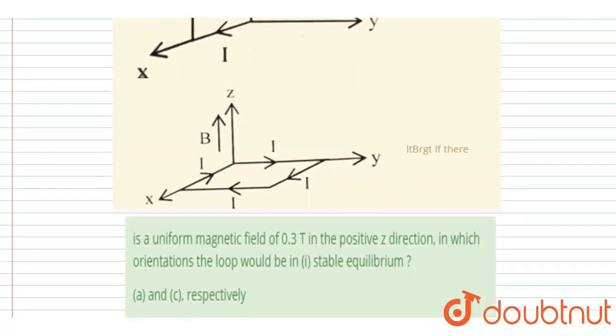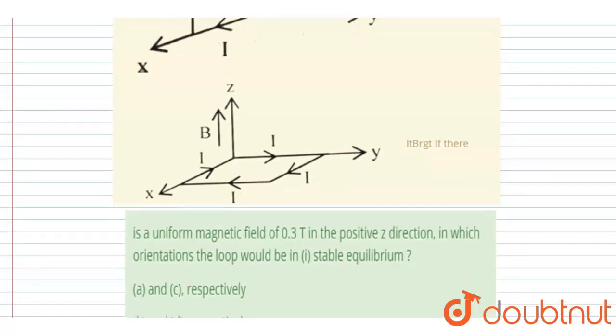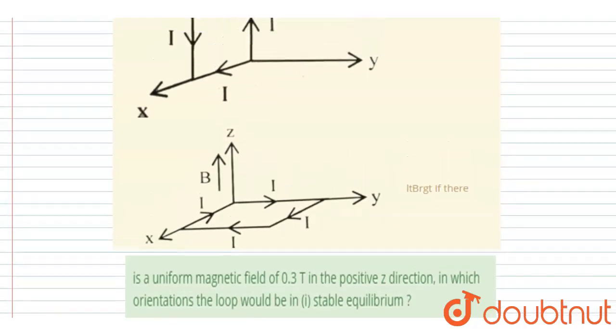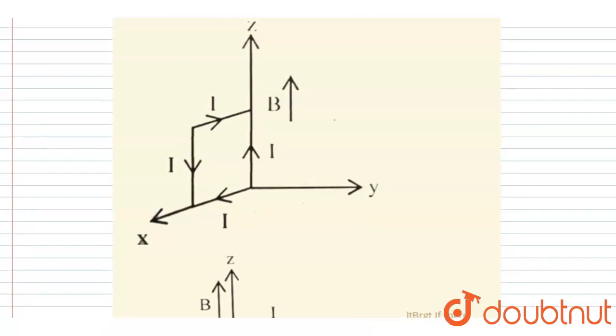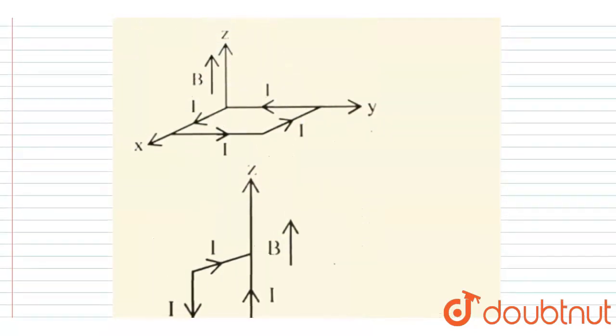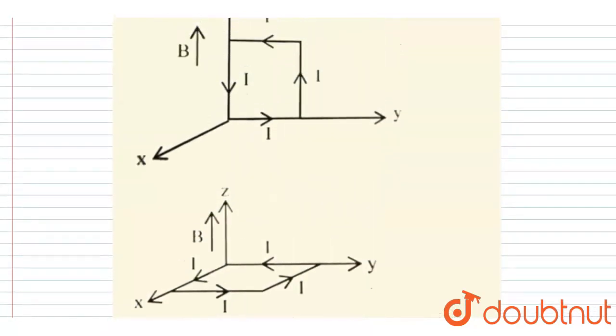It is given that there is a uniform magnetic field of 0.3 tesla in positive z direction. You can see it is already indicated in the diagram that the magnetic field is directed toward the z direction.